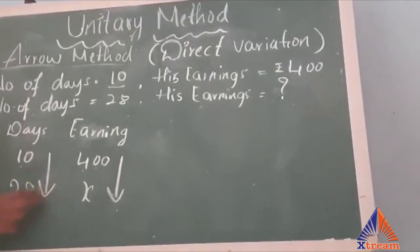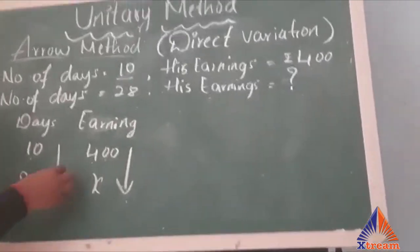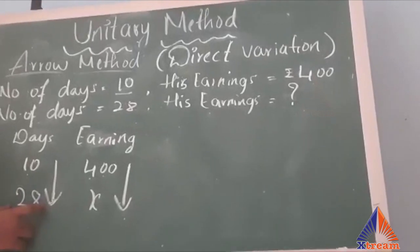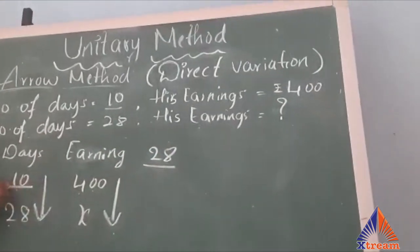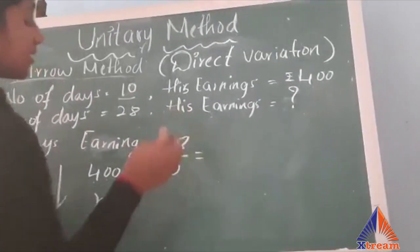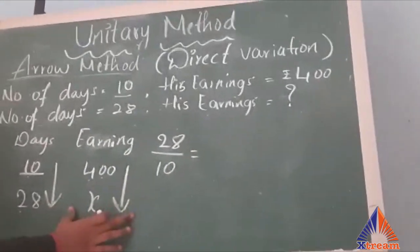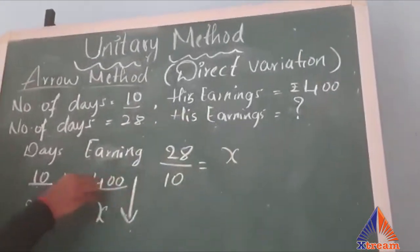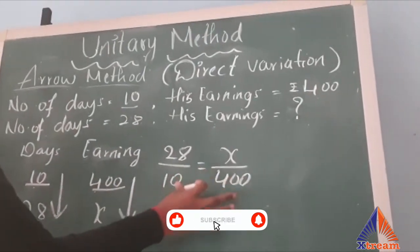Our second step is completed. Now the third step is writing the numbers in fractional form. The arrow is pointing towards 28, so 28 is written in the numerator and 10 in the denominator. In the second column, the arrow points towards x, so x is written in the numerator and 400 in the denominator. This is how we write the numbers in fractional form.